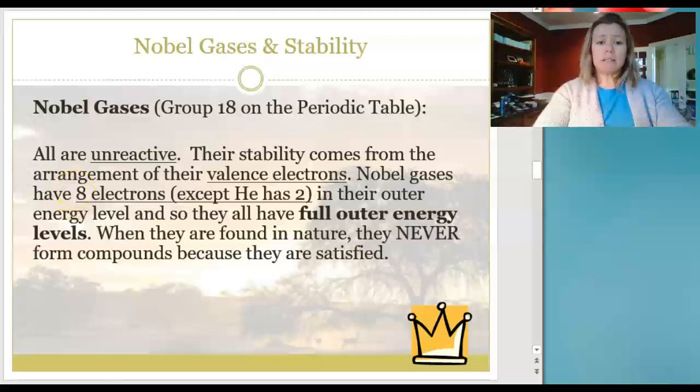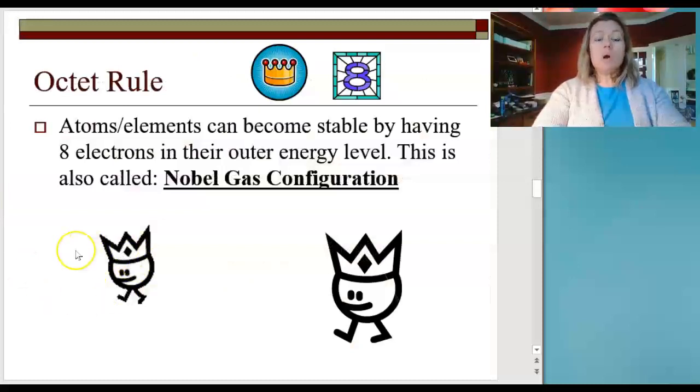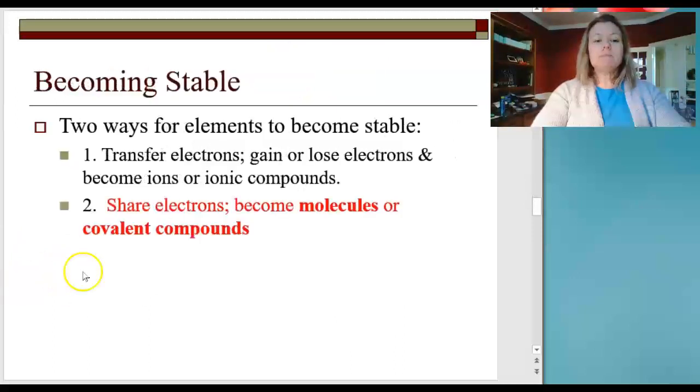We call them noble because they're kind of snooty, they're stuck up, they're royal, they don't interact. They don't interact because they're content with a full outer energy level, and for them that means eight electrons or two if it's helium. A full valence shell means everybody's happy. We call that the octet rule, octet for eight, the rule of eight, happy with eight.